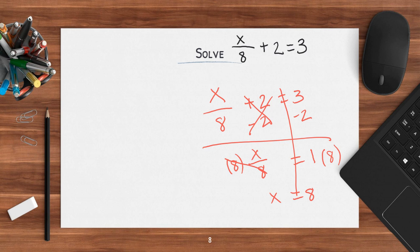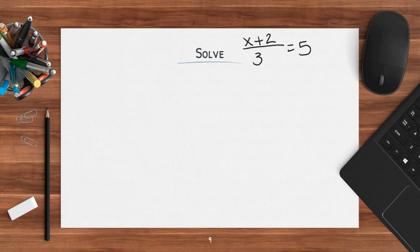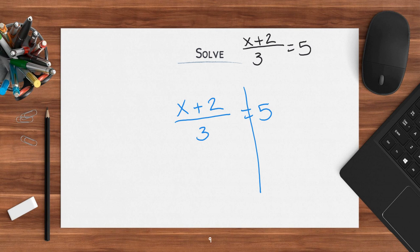Let's check ourselves. Does 8 divided by 8 plus 2 equal 3? 8 divided by 8 is 1. Does 1 plus 2 equal 3? Yes, it does. Now this one looks super hard, but I promise it's not. I have x plus 2 divided by 3 equals 5. I draw my line down.